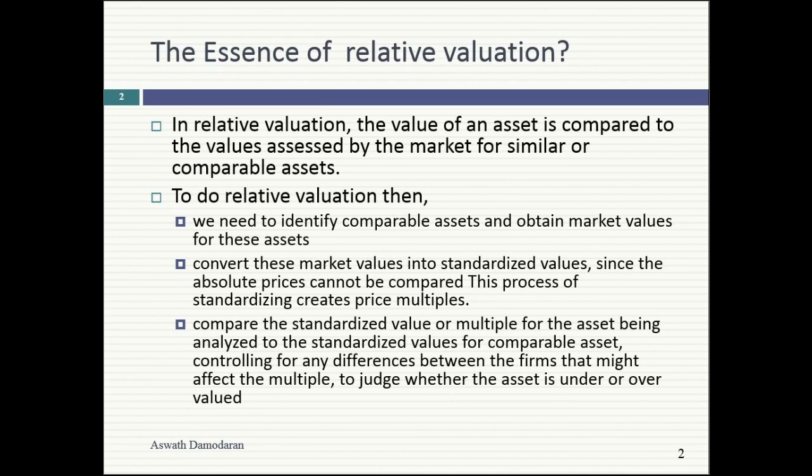So what do you need to do? You need to standardize that price — divide the market price by something you can compare. You can divide by earnings, by book value. Whenever you use a multiple, you're just using a standardized price. Even in real estate you see standardized prices — commercial real estate uses price per square foot because a 3-story building sells for less than a 30-story building. So: you've got comparable assets, you've standardized the price into multiples, and you compare your company to those.